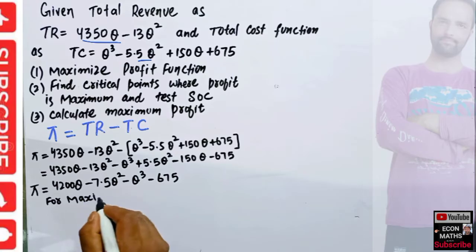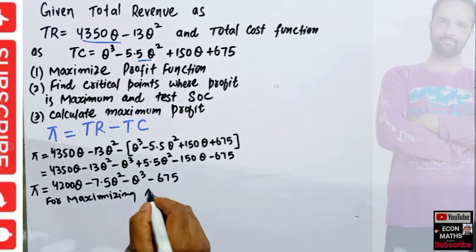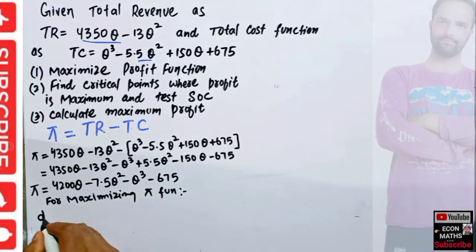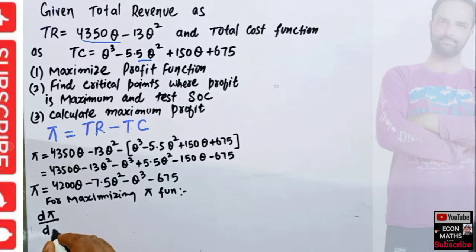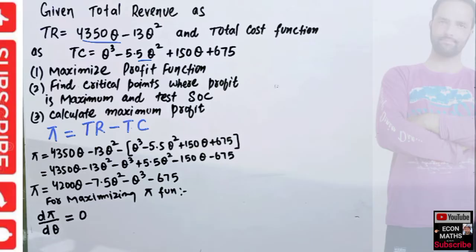To maximize the profit function, we take the first derivative of the profit function with respect to output and set it equal to zero. This is the profit maximizing condition — the first order condition (FOC): dπ/dQ = 0.